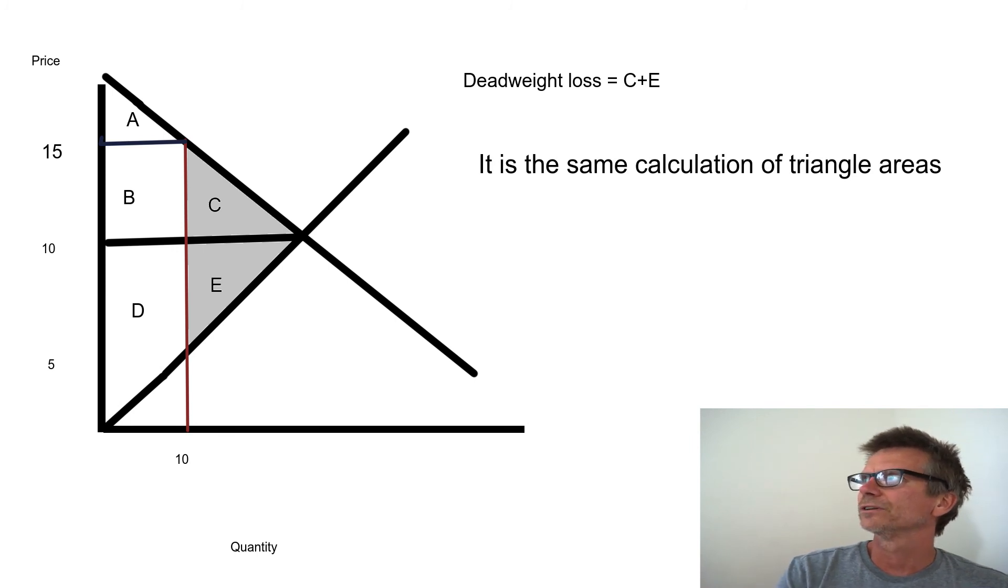Deadweight loss. What does society lose by having these price floors and ceilings? It's the area C plus E. And it's the same calculations of the triangles. That's all you need to know. It's just simply calculating the triangles.